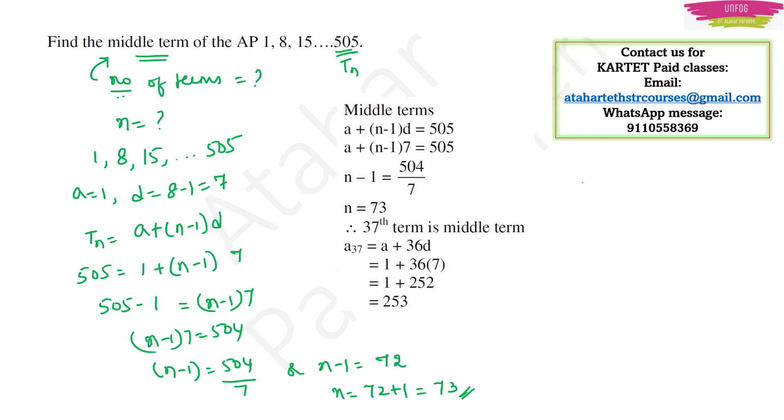Now I got the nth term. n is equal to 73. Now if I have n is equal to 73, what will be the middle term? Middle term will be equal to 73 by 2. So I will take as 37th term. That will be the middle term.